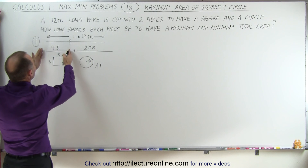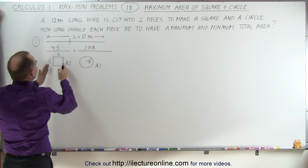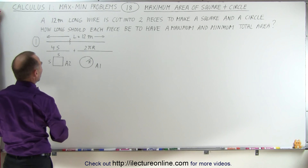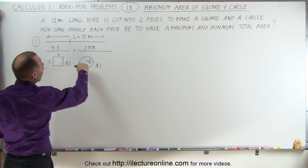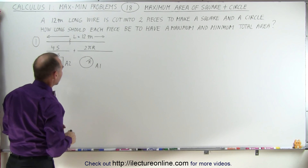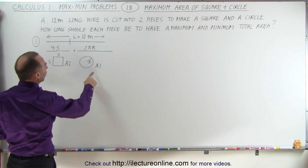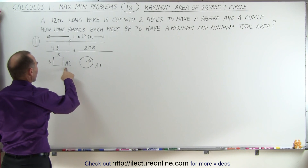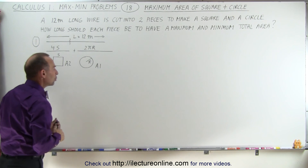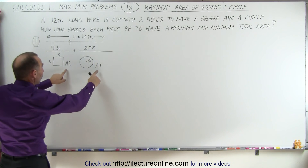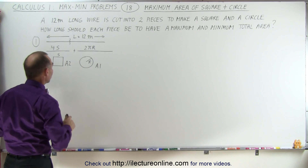We know that the length of one piece for the square is going to be 4 times the side length of the square, and the length of the piece for the circle is going to be 2πr. If we call the area of the circle A1 and the area of the square A2, then the total area is simply the sum of these two.